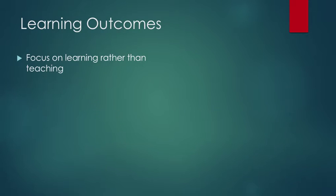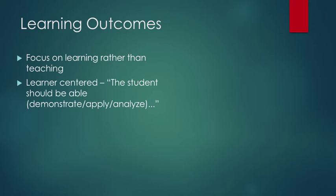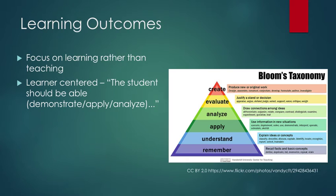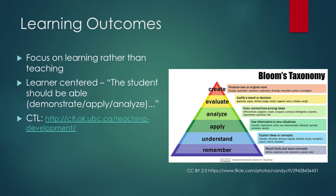The learning outcomes, on the other hand, are focused on the learning rather than the teaching end of things. So often they are introduced with the phrase: upon successful completion of this course, the students should be able to do whatever the outcome is. Learning outcomes should avoid verbs like understand, know, or learn, and instead use active verbs like demonstrate, apply, analyze, synthesize, evaluate, create. Bloom's Taxonomy is a good place to find active verbs that you can use for learning outcomes, and the UBCO Centre for Teaching and Learning has some great workshops on how to develop and write strong learning outcomes.